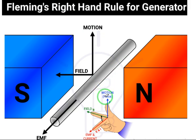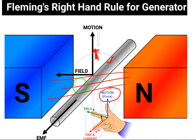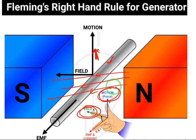In this figure you can observe: the thumb denotes motion of the conductor. The conductor will experience a force in the upward direction, and flux lines pass from north pole to south pole. The four fingers denote lines of the flux, and the thumb denotes motion of the conductor. The middle finger denotes induced EMF and current — just remember that.